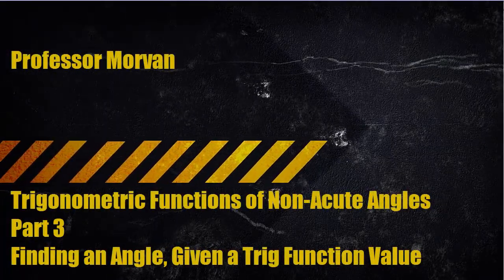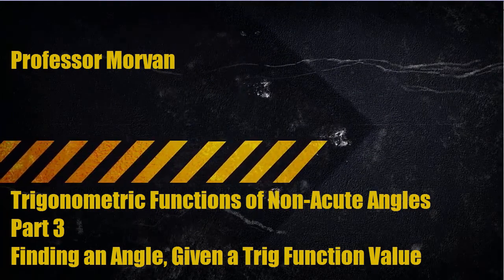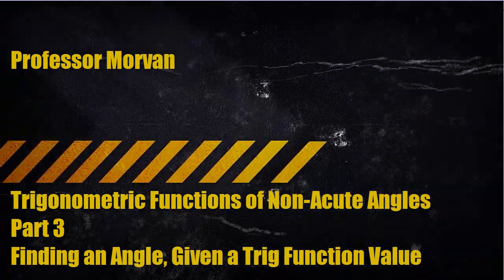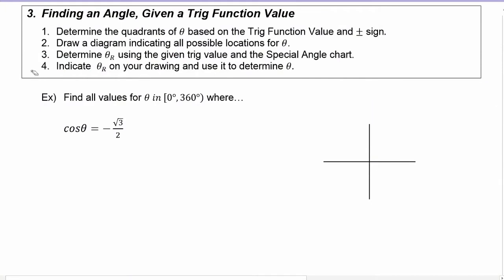In part three of our lesson on trigonometric functions of non-acute angles, you're going to learn about finding an angle given a trig function value. We'll work through four steps to accomplish this. In the first example, you're asked to find all values for theta in the interval zero degrees to 360 degrees where cosine of theta is equal to negative radical three over two.